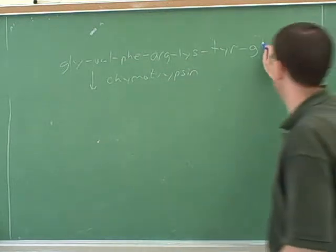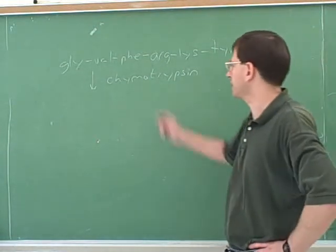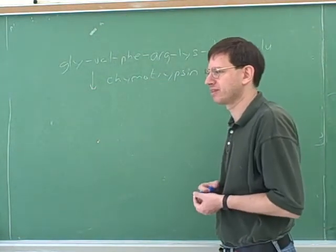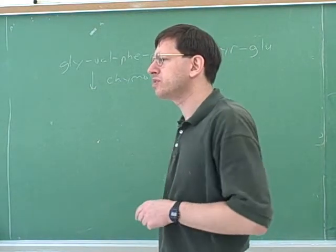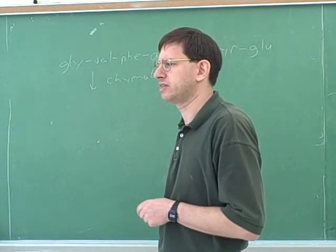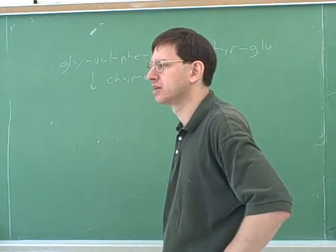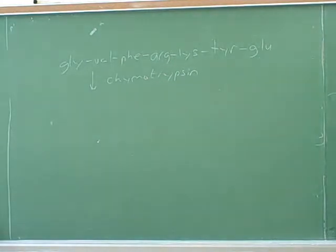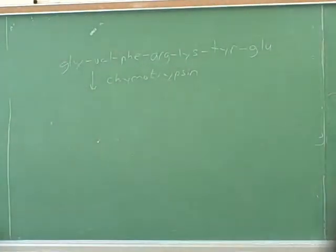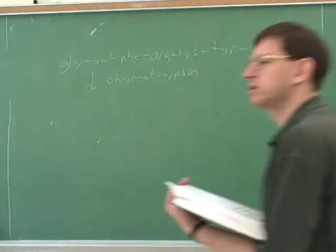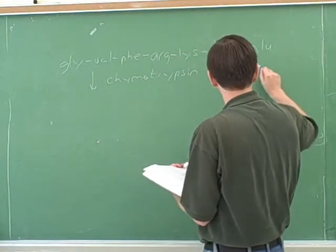We have a heptapeptide — one, two, three, four, five, six, seven. Let's figure out what it would look like after we treat it with chymotrypsin. It cuts at phenylalanine, tyrosine, and tryptophan. Most instructors will give you that cleaving information in a table. There's a table in the book in section 26.5 — it's good to look it up or have it memorized.